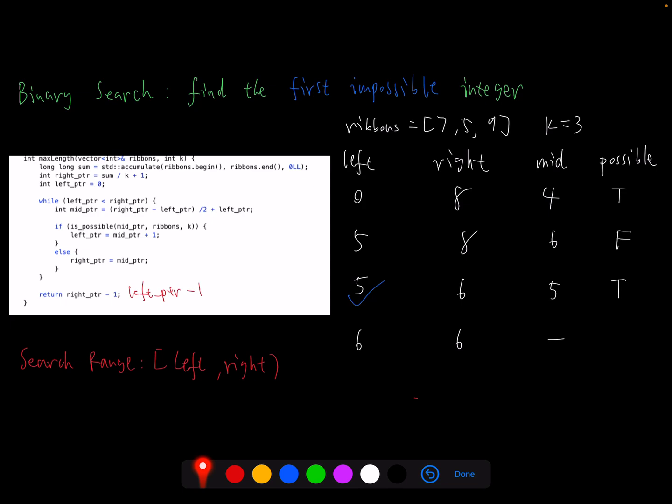Then let me show you an example how the whole thing works. So start with ribbons [7, 5, 9] and k equals 3. At start, left will be 0. Here is sum divided by k plus one. So I do plus one here because I really have an open range at the end of this range. So right is 8. Then the mid pointer is 4. Of course it's possible.